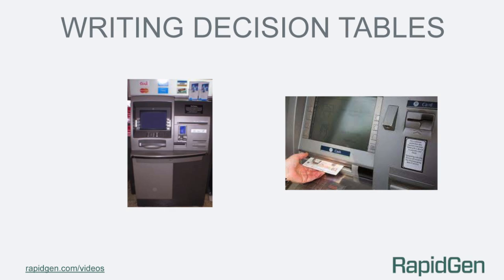Imagine you are defining the business rules for a cash point machine or ATM. You want the machine to only dispense money if the person enters the correct pin number and has enough money or credit for their account. So how do we go about writing or drawing up a decision table?